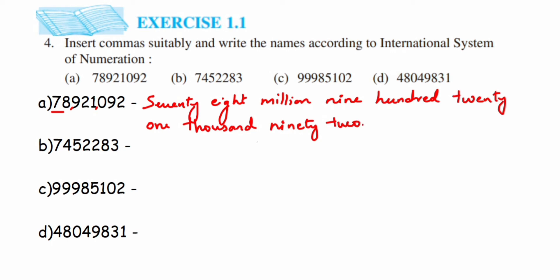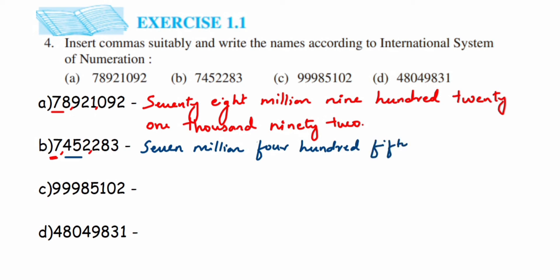For the second number, from the right side after three digits we get a comma, and after the next three we get another comma. In the millions period we have 7, so seven million. In the thousands period we have four hundred fifty-two, so four hundred fifty-two thousand. In the ones period we have two hundred eighty-three.